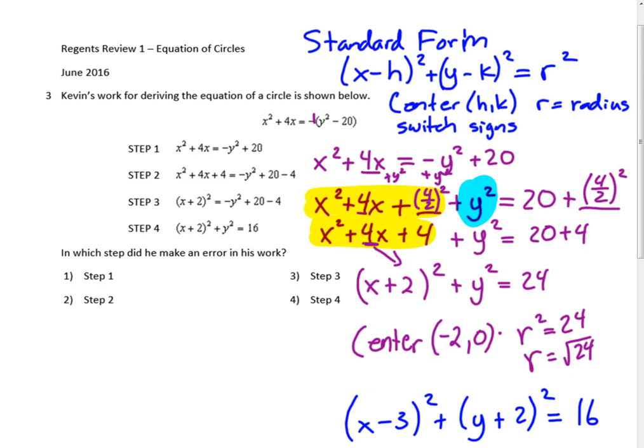So in this question it's asking us what step did he make an error in his work. Let's go ahead and compare. Well in step 1 he distributed the negative 1. That looks correct, so step 1 is good. Then what happens here—what's different in this next one? Do you see how it's adding 4 and subtracting 4? Well that doesn't work. You can't—whatever you do to one side, you have to do to the other side in order for an equation to be balanced. So the mistake that they made here was in step 2.